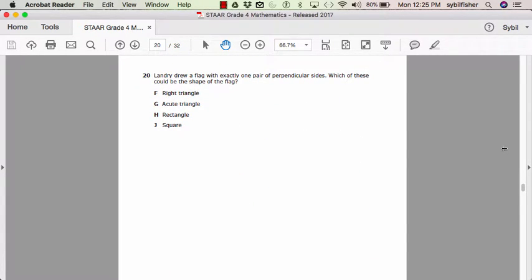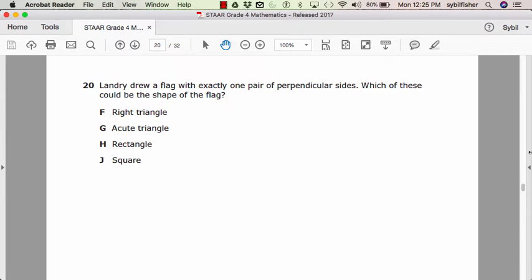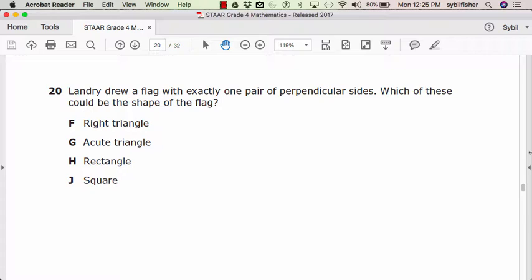Number twenty. Landry drew a flag with exactly one pair of perpendicular sides. Which of these could be the shape of the flag? F, right triangle. G, acute triangle. H, rectangle. Or J, square?